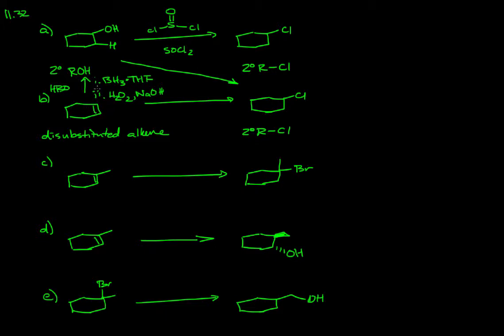The second part of that reaction is the actual oxidation with hydrogen peroxide in the presence of sodium hydroxide. We do hydroboration to the secondary alcohol, and then we can take the secondary alcohol to the secondary chloride. Part C is asking us to take a trisubstituted alkene to make a tertiary bromide.